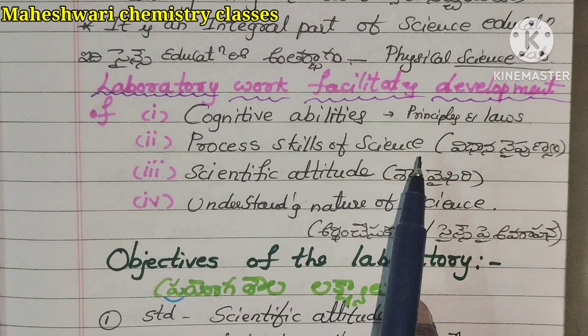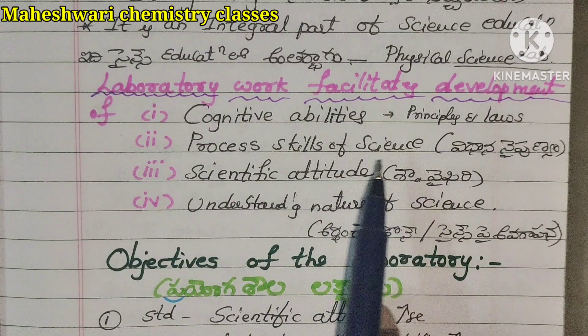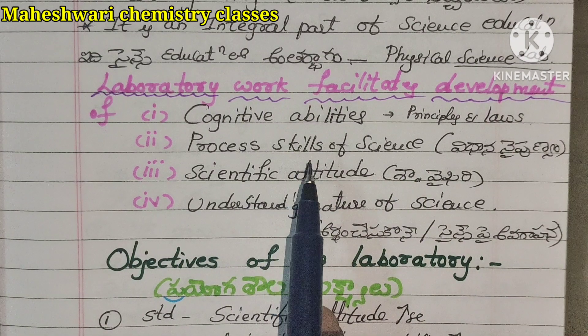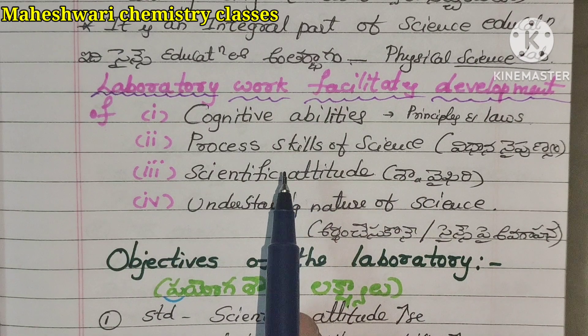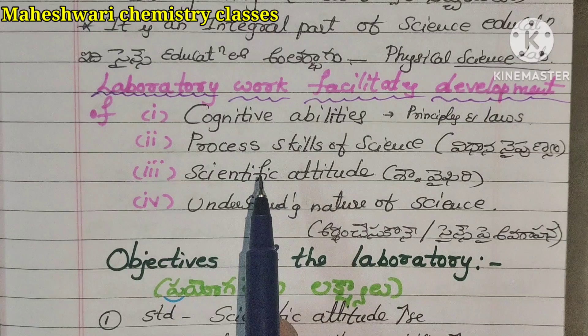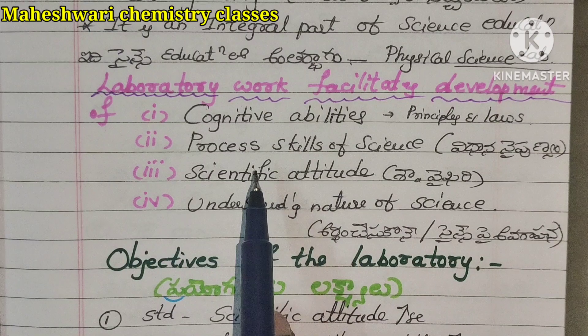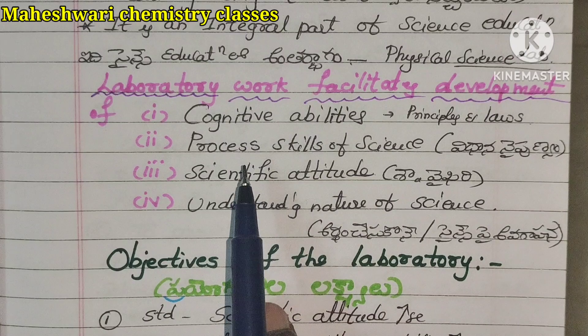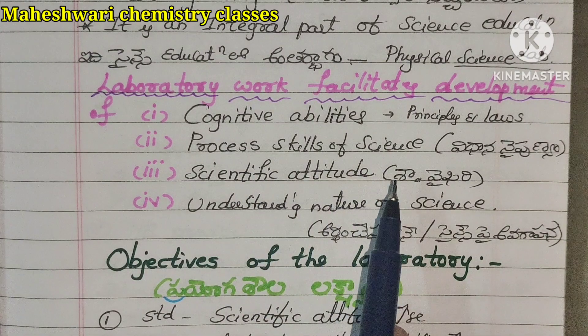Looking at the process skills of science — how can we achieve the process? Step by step, that process works. What is the name? Process skills of science.